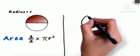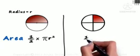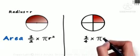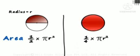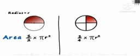Next, consider a circle divided into four equal parts. The area of one such part will be 1/4 into πR², which is the required area for one portion of the circle.